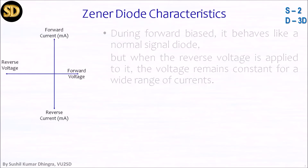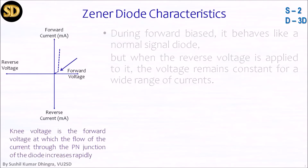Looking at the V-I diagram: in forward bias, initially a negligible current will flow with slightly forward voltage. At one moment, when it crosses its knee voltage — the forward voltage at which current through the diode increases rapidly — current increases steeply. This has already been explained in previous sessions.